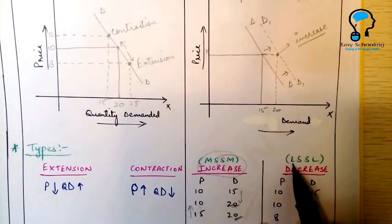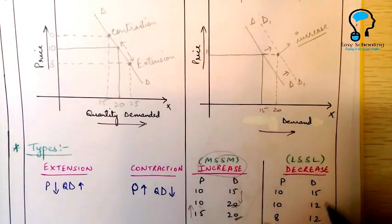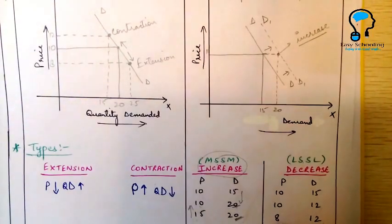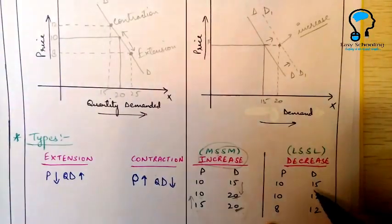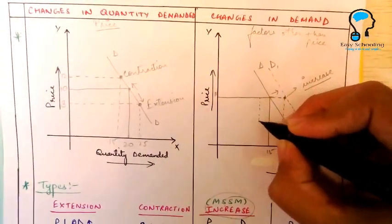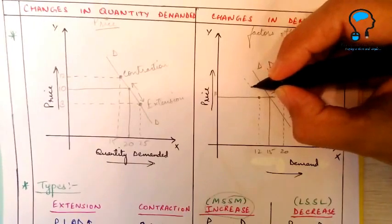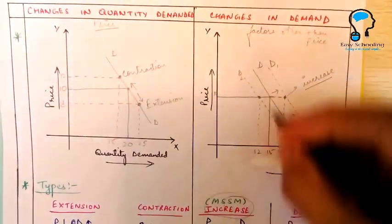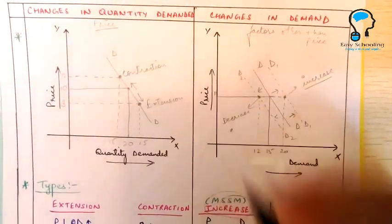A short form for decrease in demand: less is demanded at the same price, and the same is demanded at a lower price. When price is 10, demand is 15; price is still 10 but demand has decreased from 15 to 12. And when we reduce the price from 10 to 8, still the demand is 12 — it has not increased. So we plot this and it gives us a new demand curve D2. When the demand curve shifts to the left, it shows a decrease in demand.